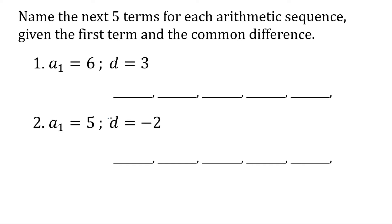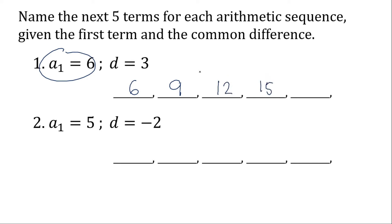So how do we do that? We need to list the first five terms. We know in number one that six is the first term. Since three is the common difference, we only need to add this to the first term to get the second term. So three plus six is nine. Nine plus three is twelve. Twelve plus three is fifteen. Fifteen plus three is eighteen. So these are the first five terms for number one.